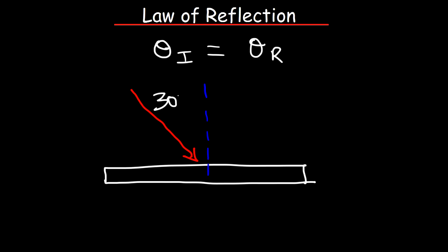The angle of incidence is 30 degrees — that's the angle between the light ray and the normal line. According to the law of reflection, the ray is going to bounce back at the same angle, so the angle of reflection, also measured between the normal line and the reflected light ray, is going to be 30 degrees.